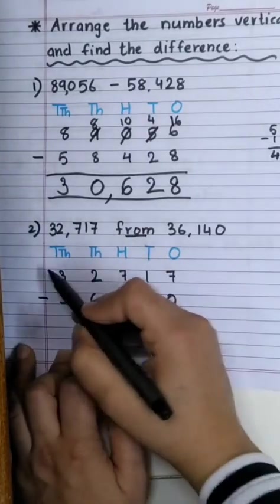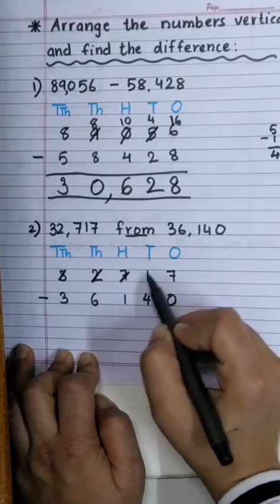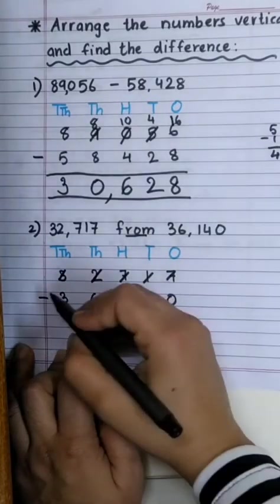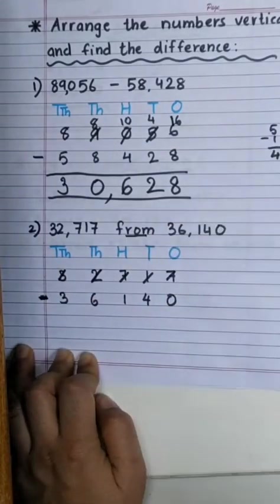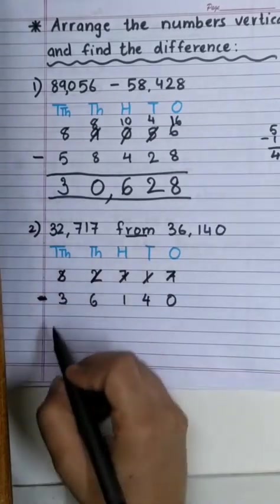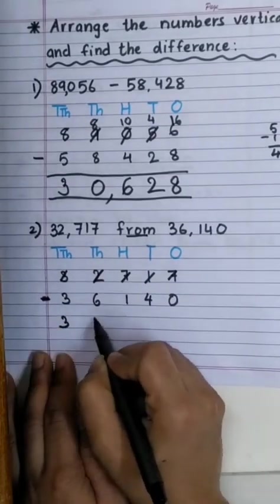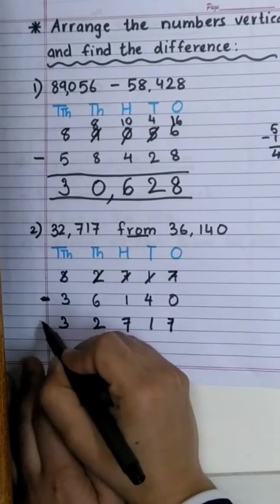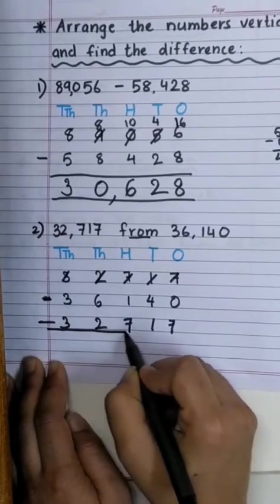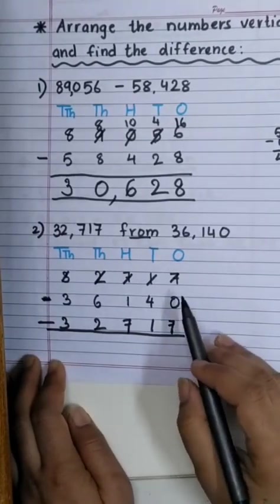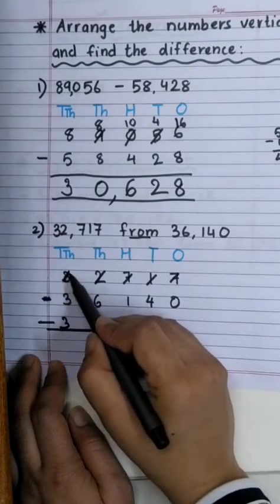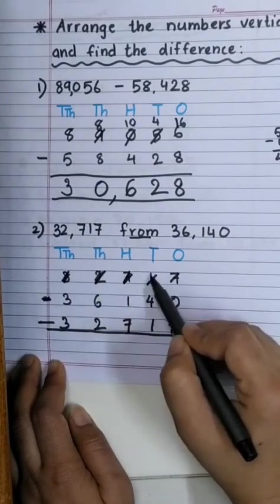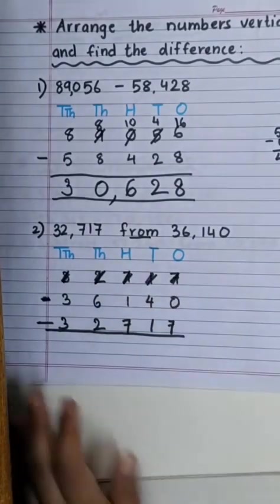Great! Now, let's cut this. As we know, this is a mistake. Now, we will write 36,140 over here. Always remember, smaller number is subtracted from bigger number. Okay! Good!